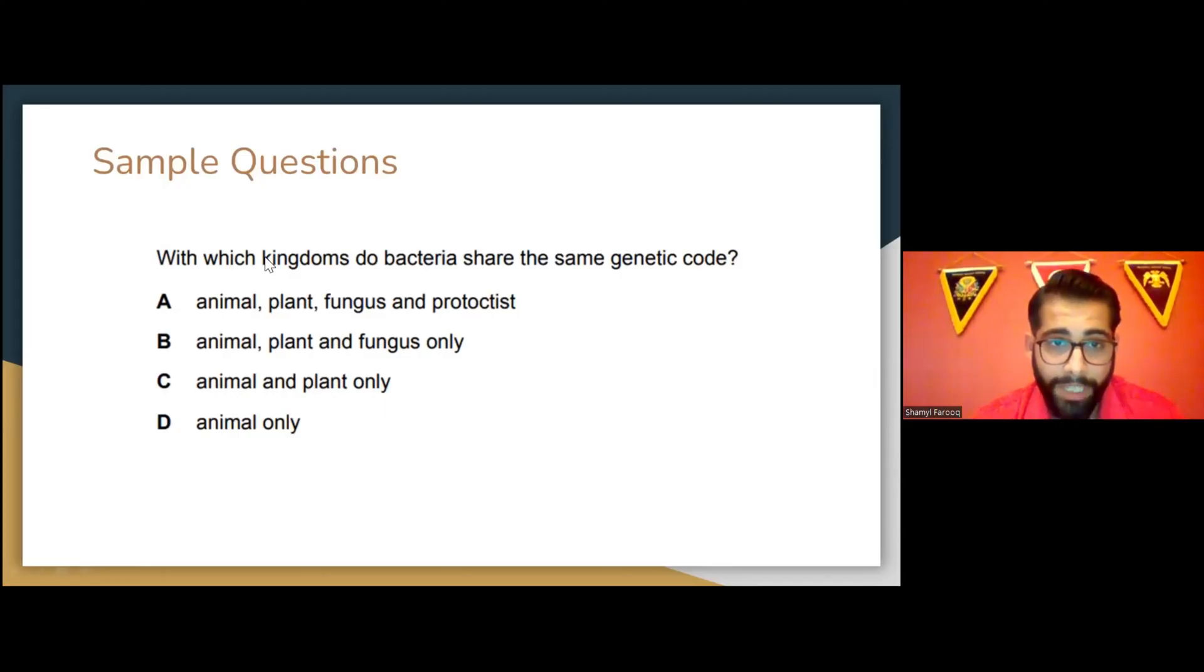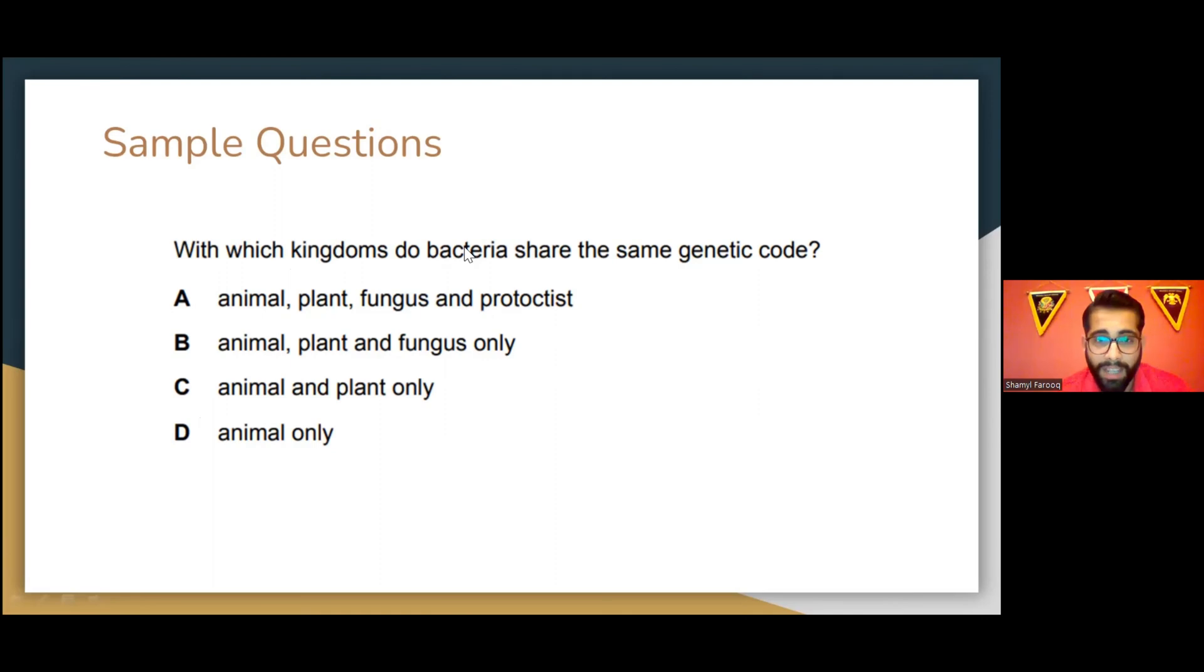Which kingdoms do bacteria share the same genetic code? Now, this question is one that you need to think about. Here are a couple of options. Remember, bacteria is a prokaryote, and you might have heard the story that mitochondria and chloroplast used to be a bacteria at one point. Each animal, plant cell, fungi, or protoctist have a chloroplast or a mitochondria at least. So what do you think is going to be the answer? Obviously the answer is going to be A: animal has a mitochondria so it shares a genetic code with bacteria, plant has both, fungi has mitochondria, and protoctist has both mitochondria and chloroplast.